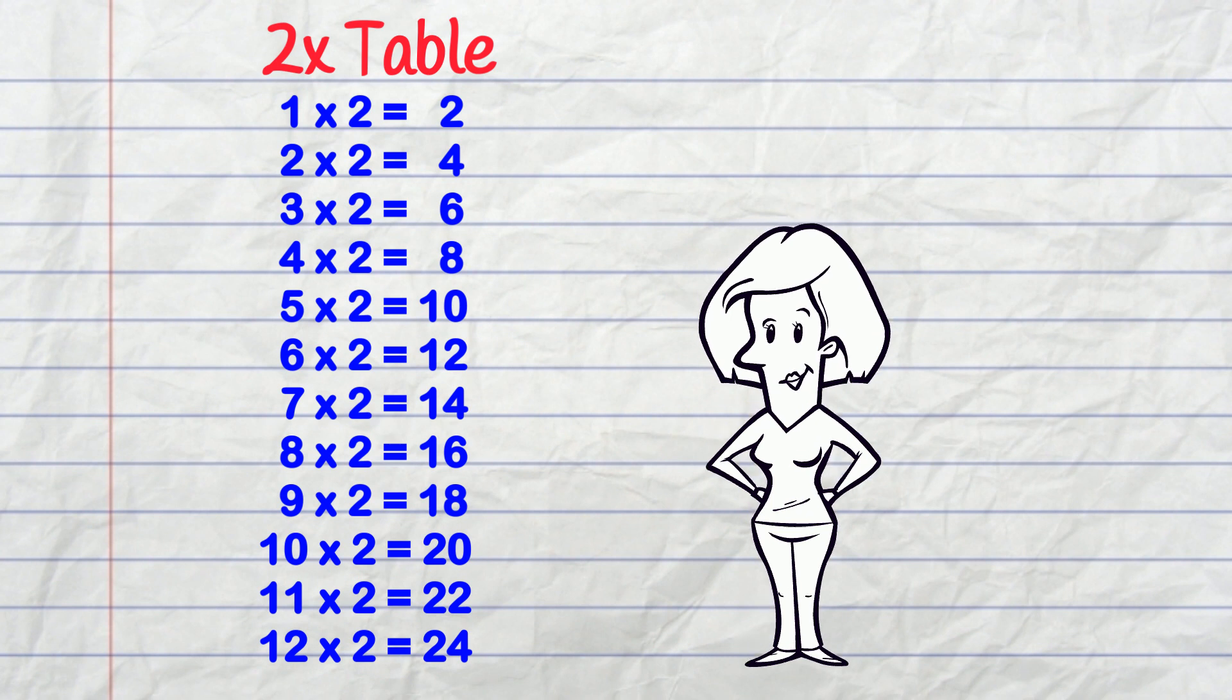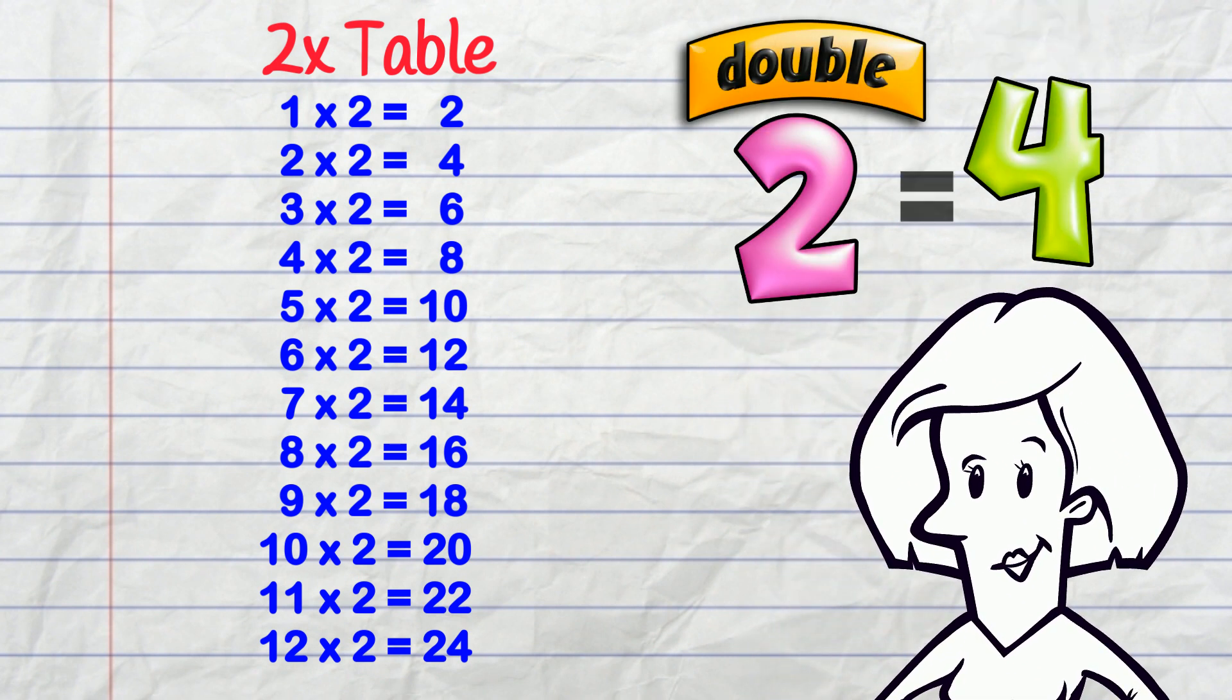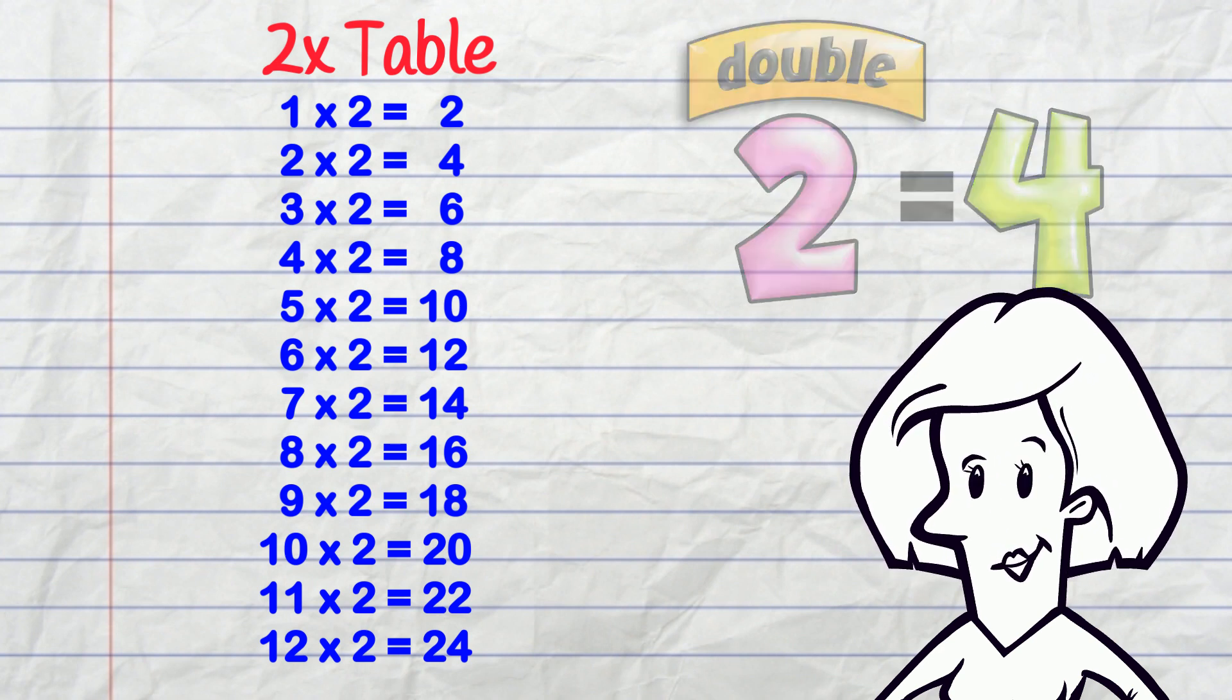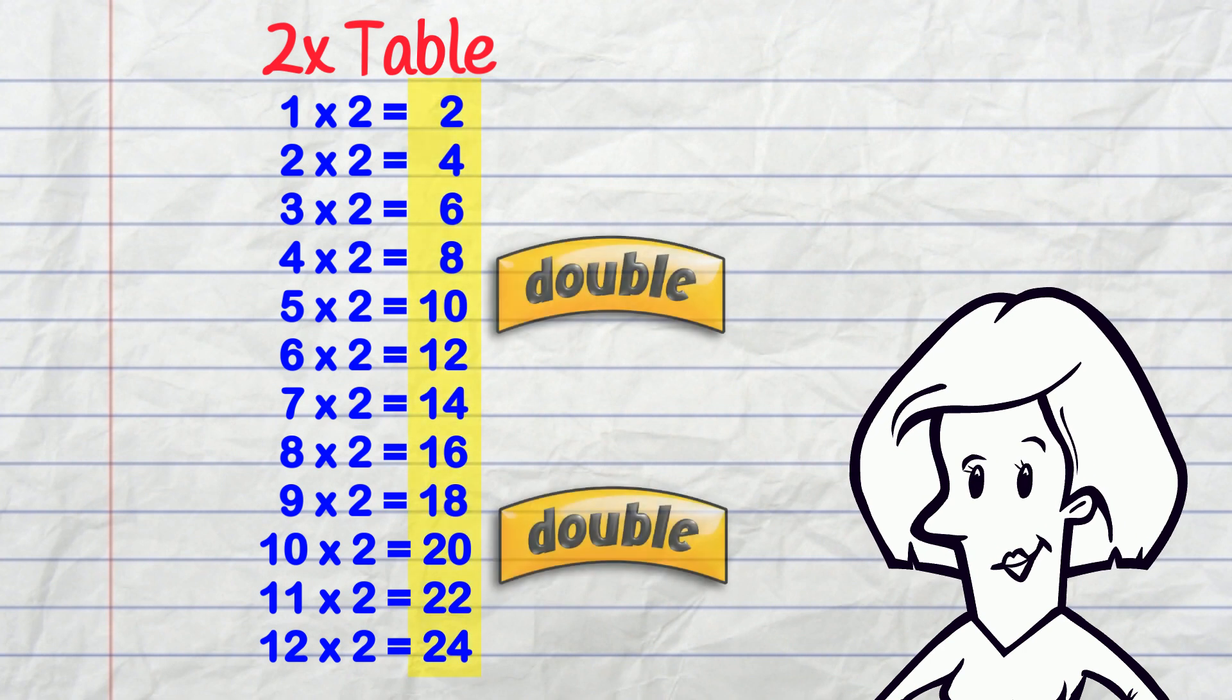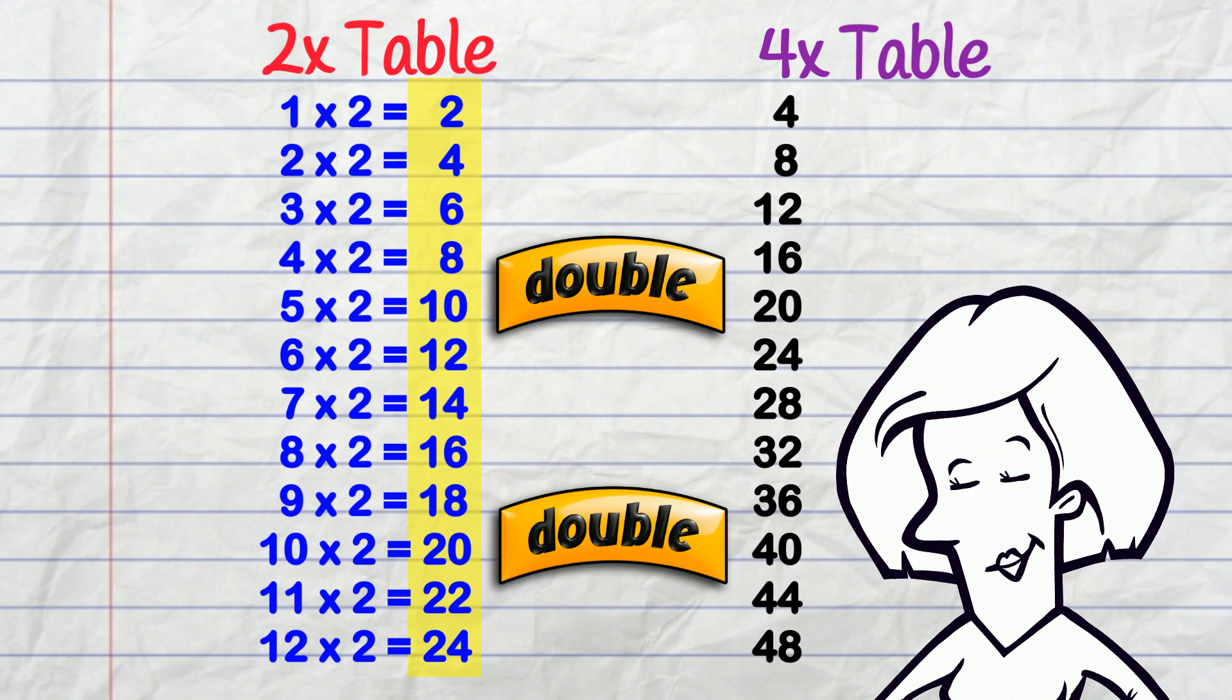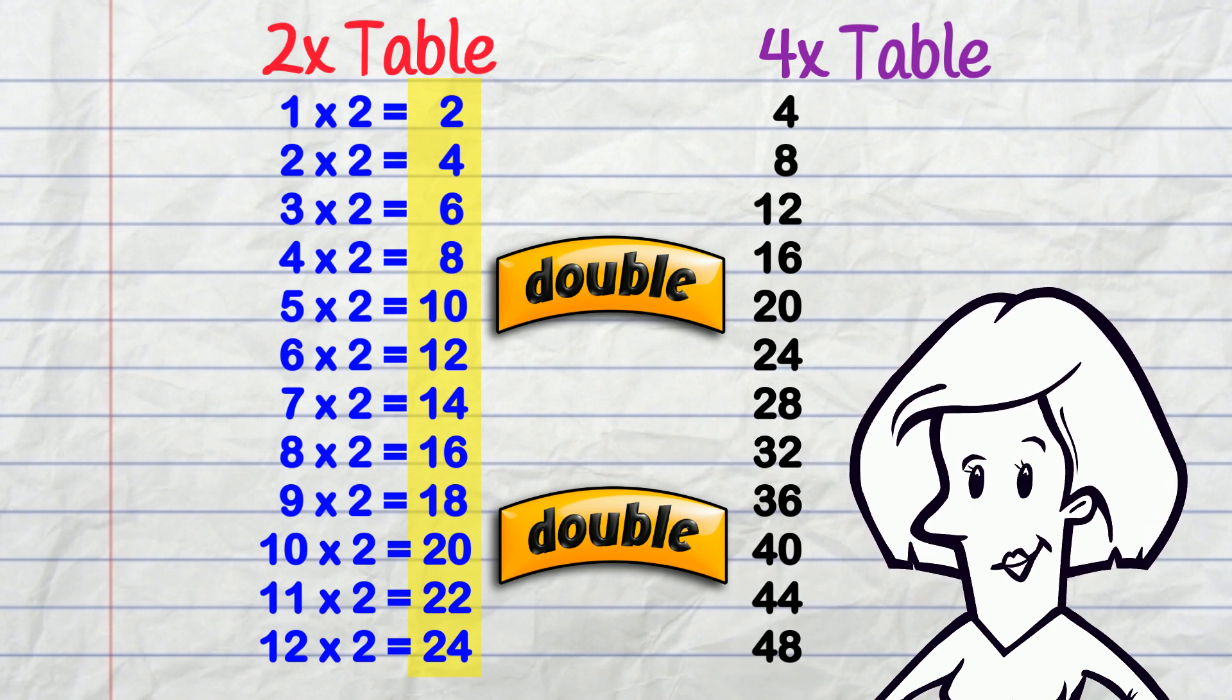You also know that if you double 2 you get 4. So, this means that if you double the answers in the 2x table, you get the answers in the 4x table. I want you to see these patterns and relationships as you're going through. So now, here we go!